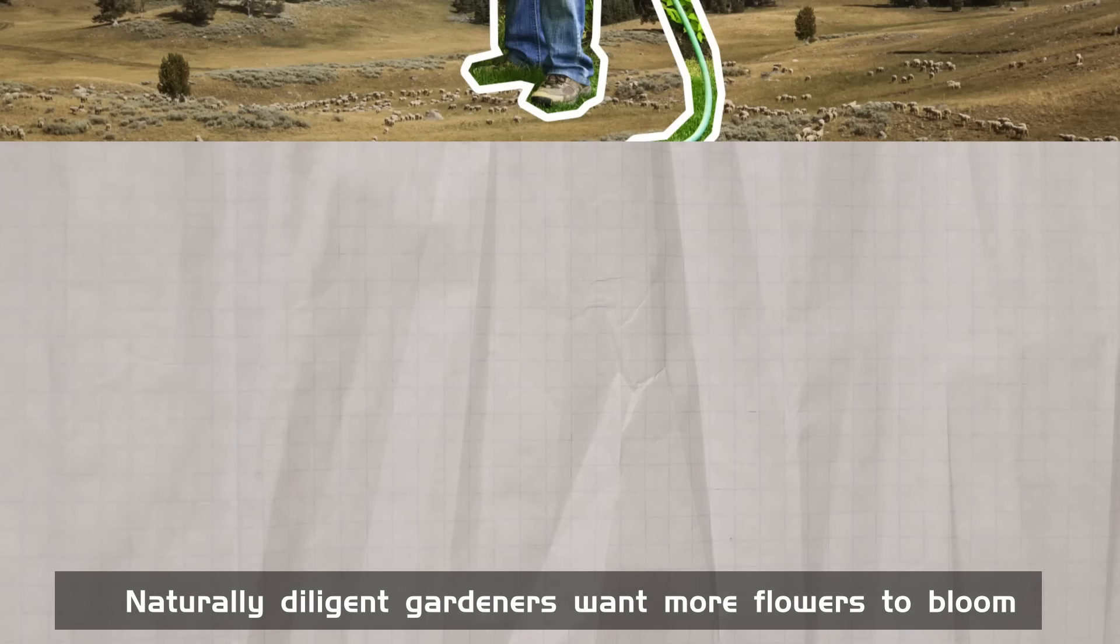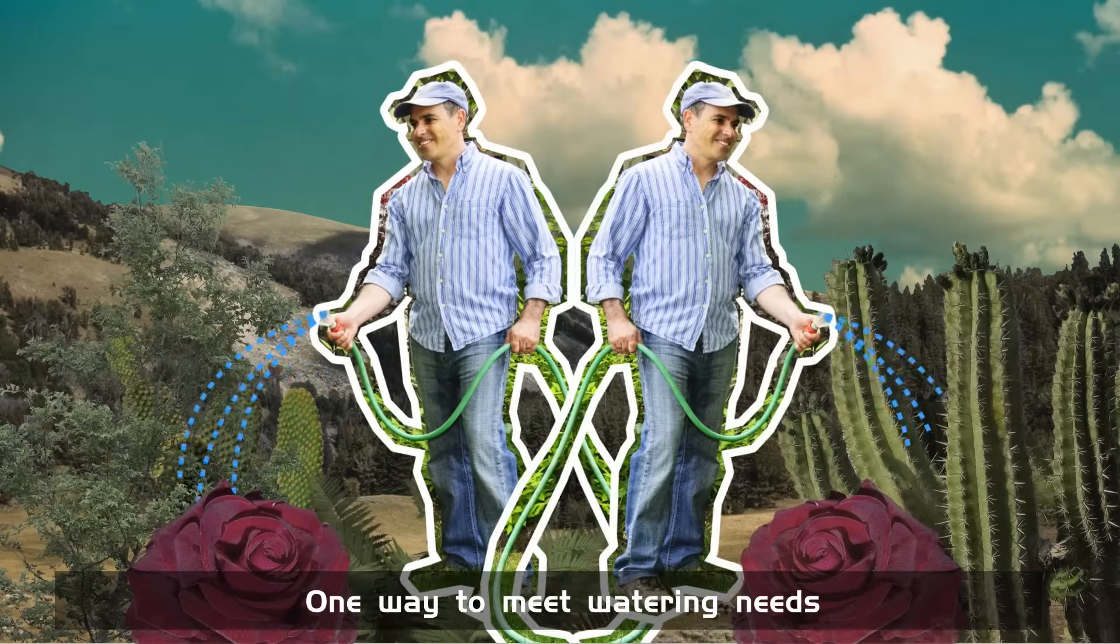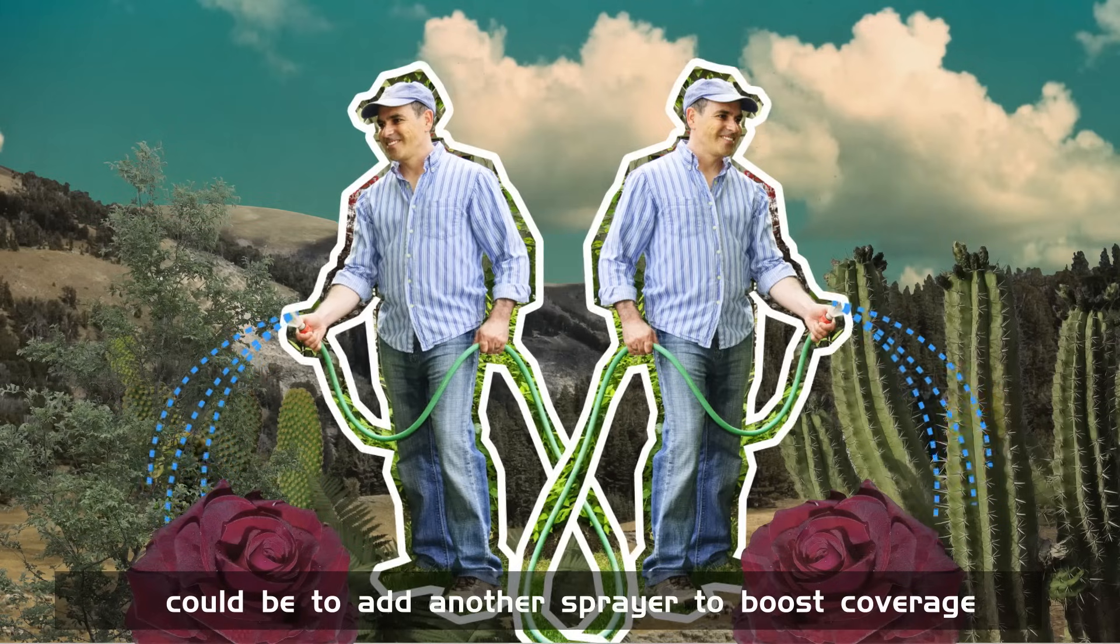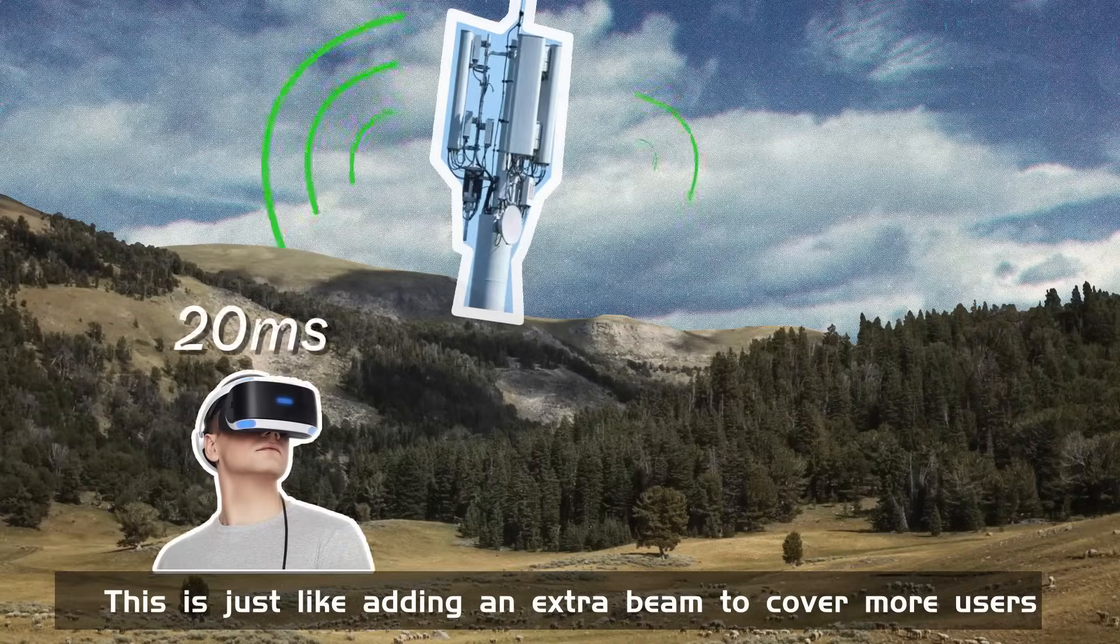Naturally, diligent gardeners want more flowers to bloom. One way to meet watering needs could be to add another sprayer to boost coverage. This is just like adding an extra beam to cover more users.